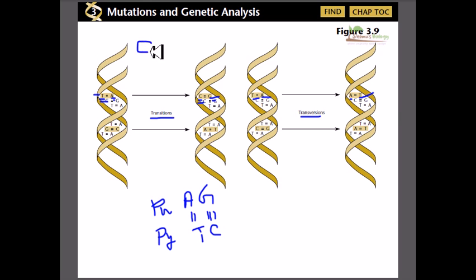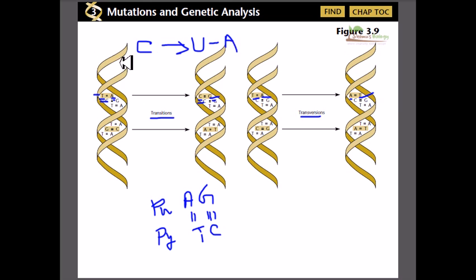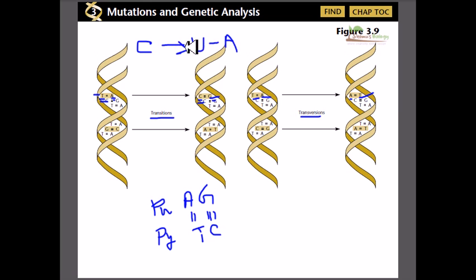Another example: if cytosine is methylated at the 5 prime position, it is converted into uracil. This uracil will pair with A instead of G, so we end up with a U-A pair instead of a C-G pair. This is a transition type of mutation.